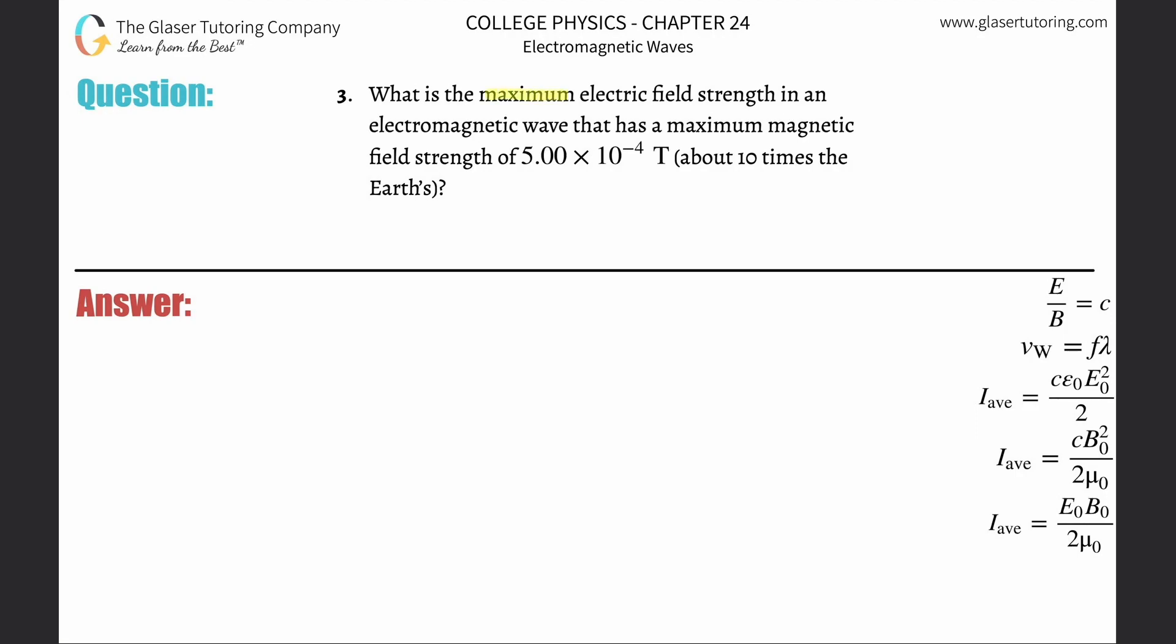Number three: What is the maximum electric field strength in an electromagnetic wave that has a maximum magnetic field strength of 5 × 10^-4 Tesla, which is about ten times Earth's field? Okay, so we have a nice equation that will relate electric field to magnetic field.